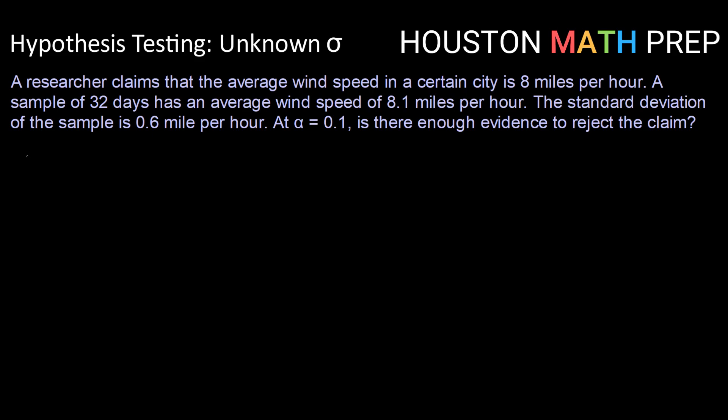Alright, so let's start out by setting up a null and alternative hypothesis. So our null hypothesis is that the average wind speed is 8 miles per hour.